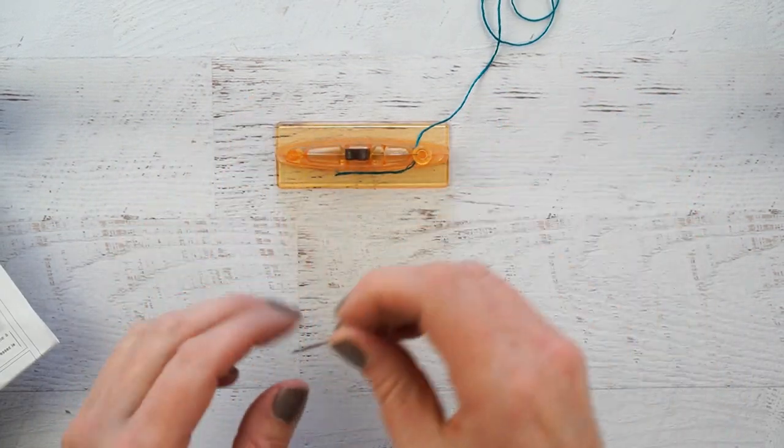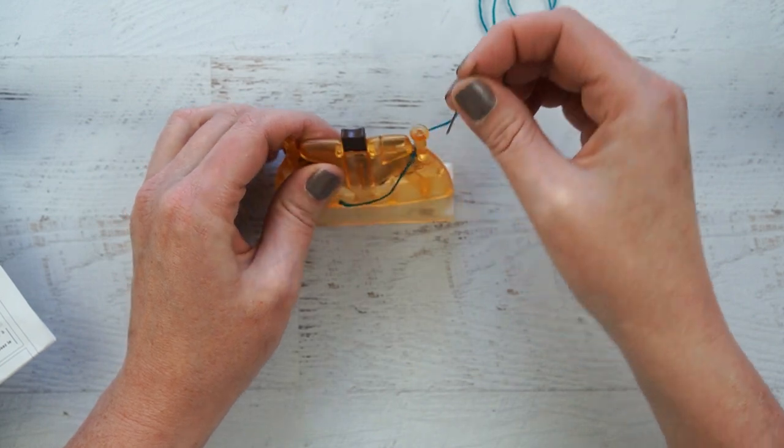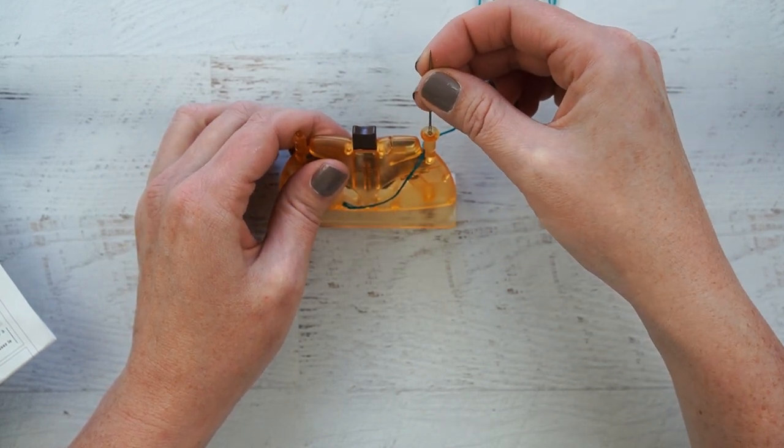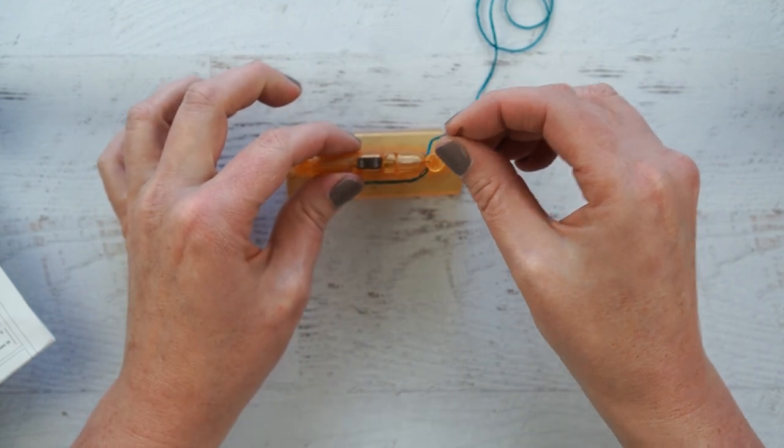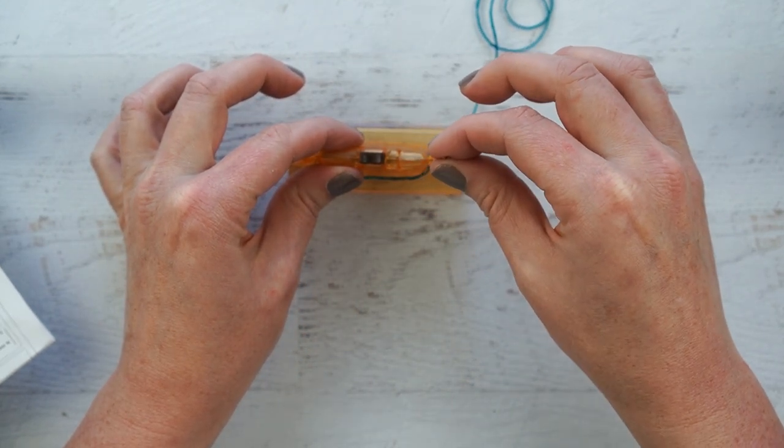Set a needle in the needle holder. There's a direction. You can't put it in with the thicker part going that way. You have to put it in. It only lets you put it one way, so that's good.